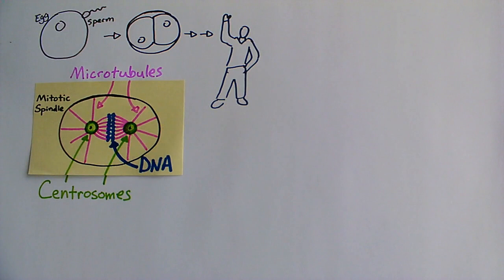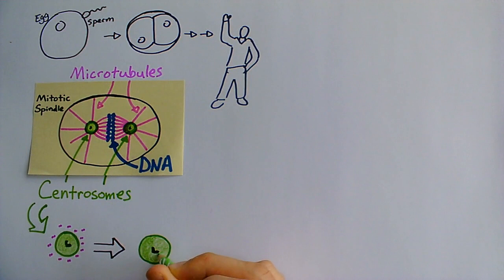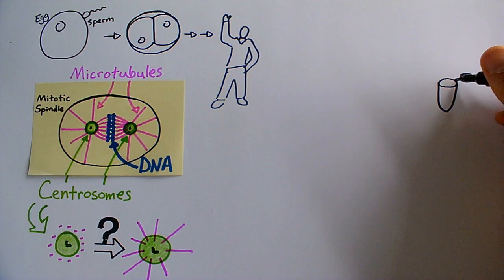How do centrosomes build so many microtubules and arrange them in the correct pattern? To answer this question, we made synthetic centrosomes in a test tube using proteins found in the nematode, C. elegans.